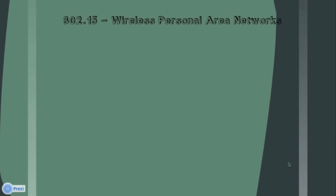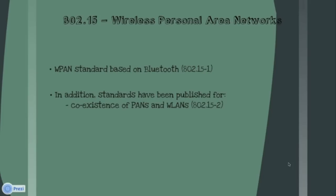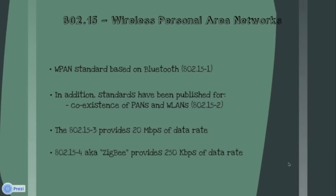As said earlier, 802.15.1 is based on Bluetooth. 802.15.2 deals with coexistence of PANs and WLANs. 802.15.3 can provide around 20 Mbps of data rate, providing low power and low cost solutions for multimedia applications. ZigBee provides short range, low power, and a low data rate of 250 Kbps.